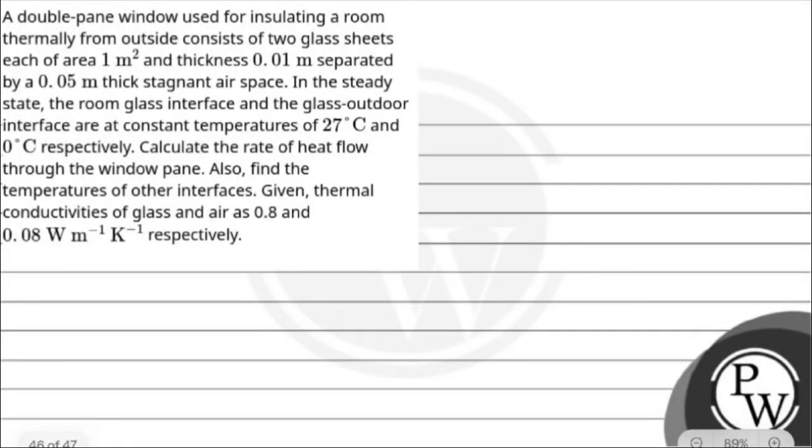Hello, let's ask this question. The question is a double pane window used for insulating a room thermally from the outside consists of two glass sheets each of area 1 meter square and thickness 0.01 meter separated by 0.05 meter thick stagnant air space.